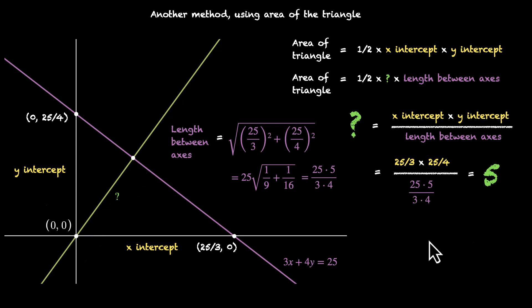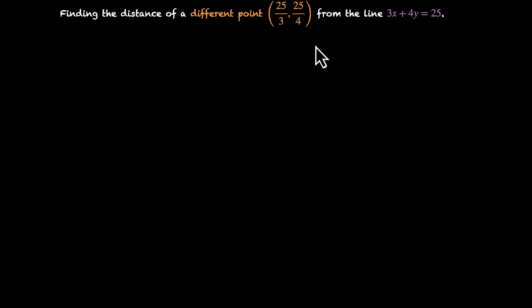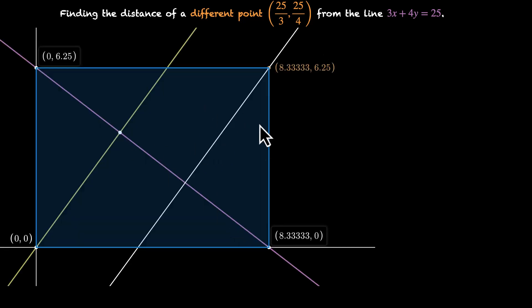Now let's zoom out and take a different point: find the distance of the point (25/3, 25/4) from the same line 3x plus 4y equals 25. If we draw this, we have (25/3, 0) as the x-intercept, (0, 25/4) as the y-intercept, origin (0, 0), and the point (25/3, 25/4) that we are after.